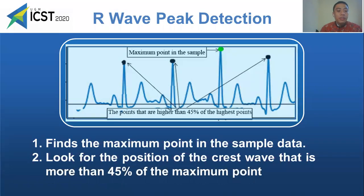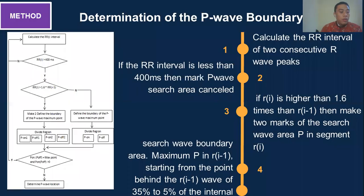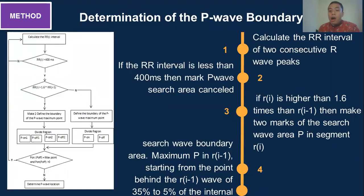R-peak detection is done in two steps. First, find the maximum point in the sample data. Second, look for the position of the search width that is more than 45 percent of the maximum point. Then determine the period boundary area by calculating the RR interval of two consecutive R-peaks. If the RR interval is less than 400 milliseconds, mark it as a short area. If the RI is higher than 1.6 times RI minus one, then mark the short width boundary area.